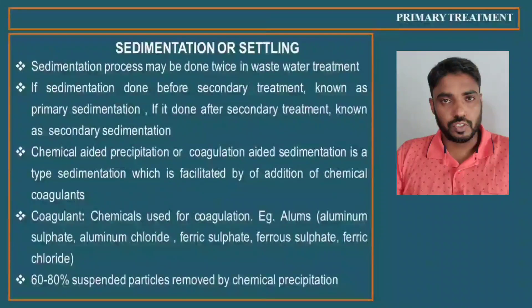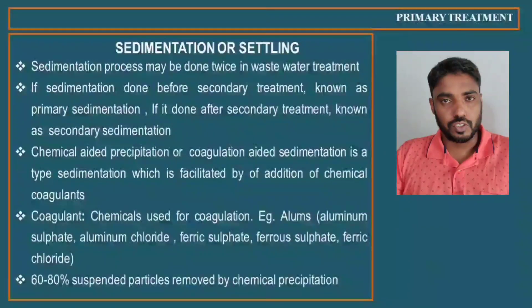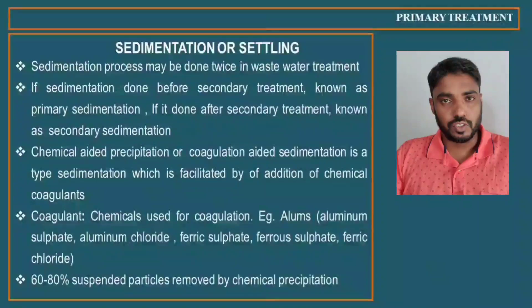When sedimentation of suspended solids is not easy, chemicals called coagulants are used to facilitate the process — this is known as chemical-aided sedimentation or coagulation-aided sedimentation. Commonly used coagulants include aluminum salts such as aluminum sulfate and aluminum chloride, and iron salts such as ferric sulfate, ferrous sulfate, and ferric chloride. Alums are also commonly used. After chemical-aided sedimentation, about 60–80% of suspended particles are removed.